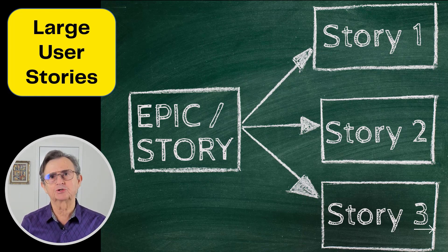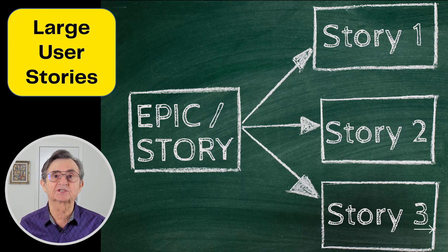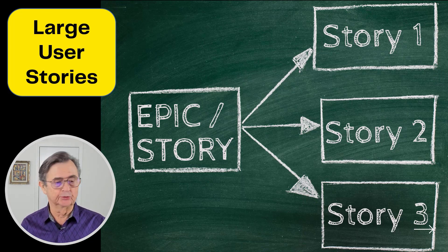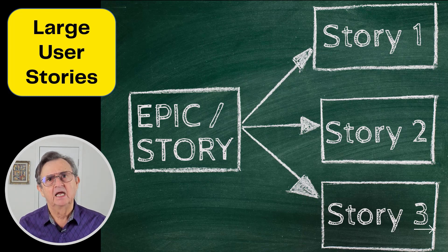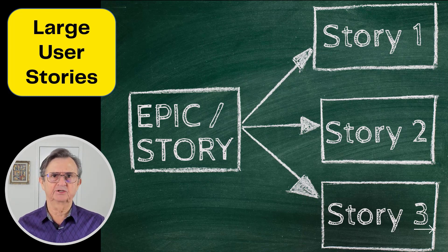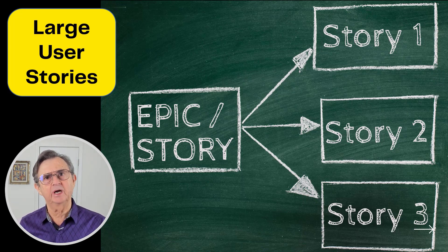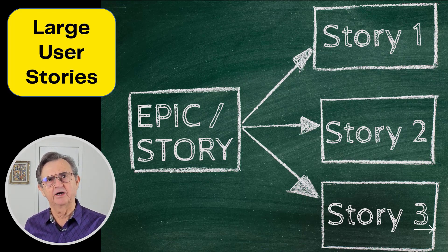The process is called user story splitting or user story slicing. You can split stories while you're grooming, also known as maintaining, the backlog. At the latest, you need to split the story to a size that allows the Agile team to estimate the effort required before release planning.